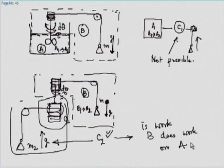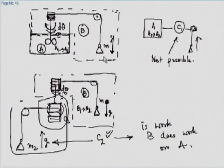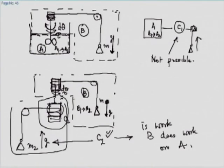I will leave it to you as an exercise to show that here I assumed the stirrer is being driven by a mass-pulley-drum arrangement. But instead, just put an electric motor there supplied from a battery, and you should still be able to show that a contraption like C2 can be set up.